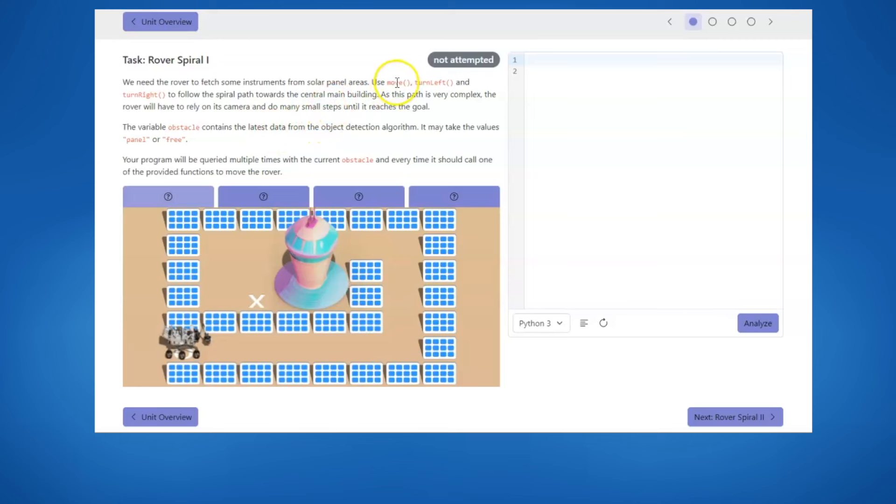Then we will make a decision based on the sensor's input. If the path is free, then the robot can continue to move forward using the move function. If there is a panel, you must decide which way to turn. As you can see in this maze, all of the turns are to the left, so the robot will always make a left turn when we find a panel. You will use the turn left function for that.